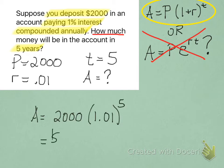So, when you plug all of these numbers in and throw that into your calculator, you get $2,102.02.